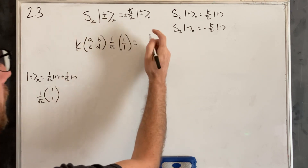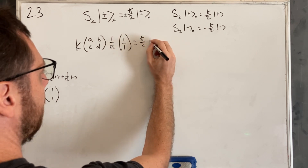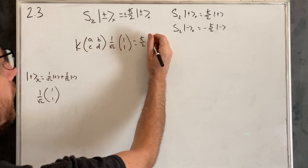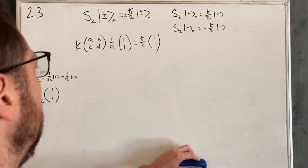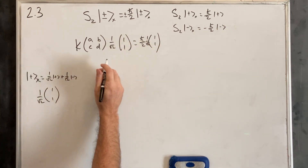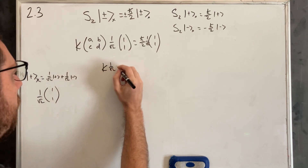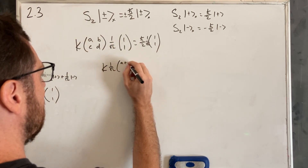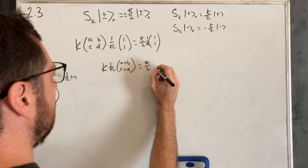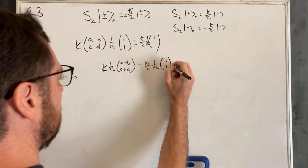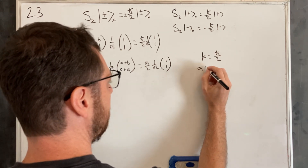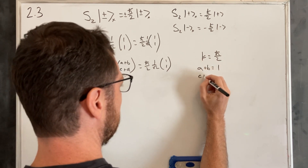That's going to equal positive ℏ/2 times |+x⟩, written in matrix notation as (ℏ/2)·(1/√2)·[1, 1]. Pulling out K and 1/√2, we get [A+B, C+D] equals (ℏ/2)·(1/√2)·[1, 1]. So we know that K equals ℏ/2, A+B equals 1, and C+D equals 1. That was for the spin-up direction.